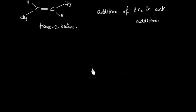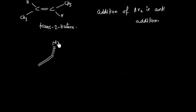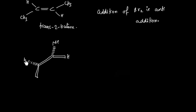Let us first make the perspective drawing of this alkene. We have a bond — methyl going inside, hydrogen coming outside, hydrogen going inside, and methyl coming outside.